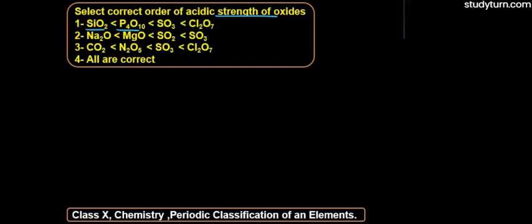First option: SiO2 < P4O10 < SO3 < Cl2O7. Second option: Na2O < MgO < SO2 < SO3. Third option: CO2 < N2O5 < SO3 < Cl2O7. Fourth option: all are correct.